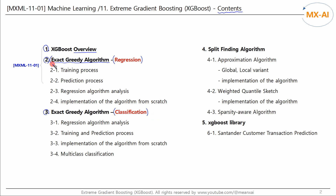The exact greedy algorithm is very accurate but takes a long time when there is a lot of data. In Chapter 4, we will look at the split-finding algorithm. For large amounts of data, an approximate method is needed, so we'll look at the weighted quantile sketch method and parallel processing methods.